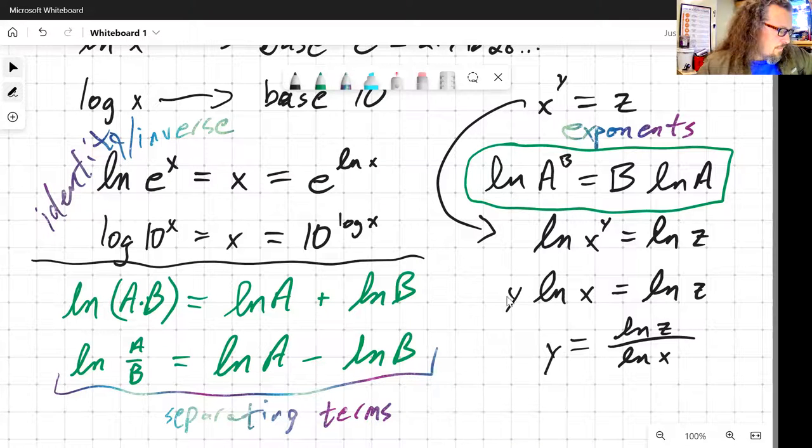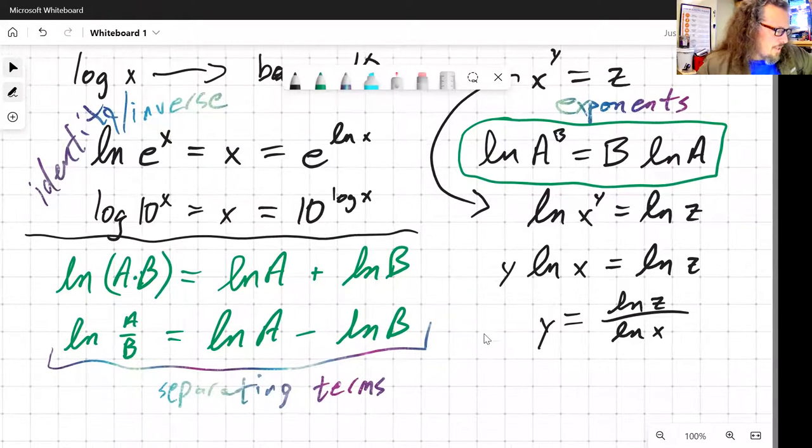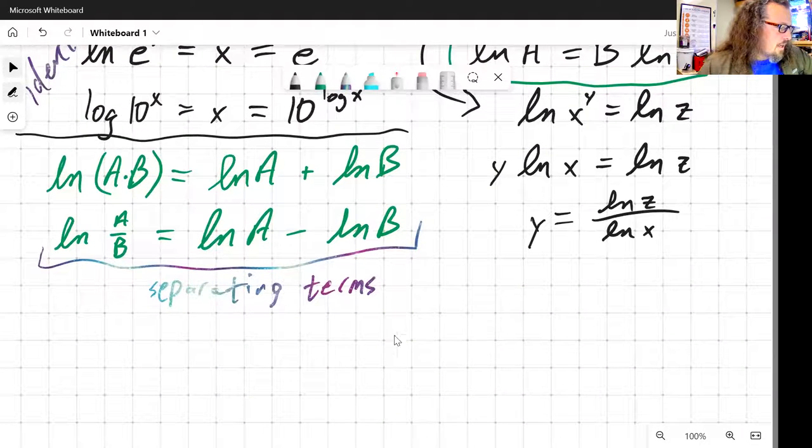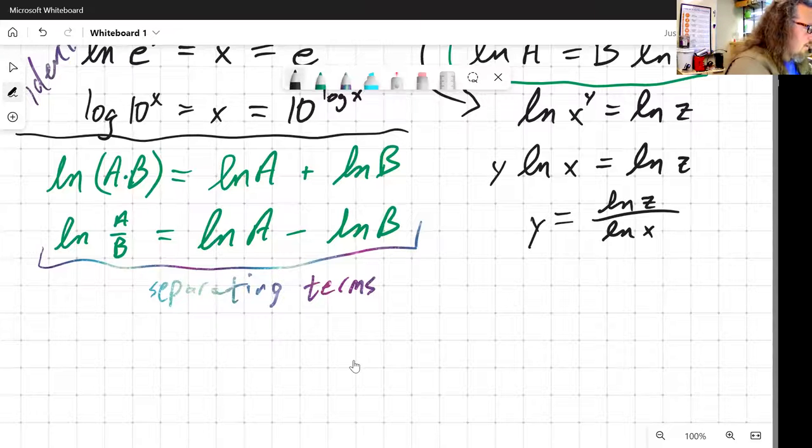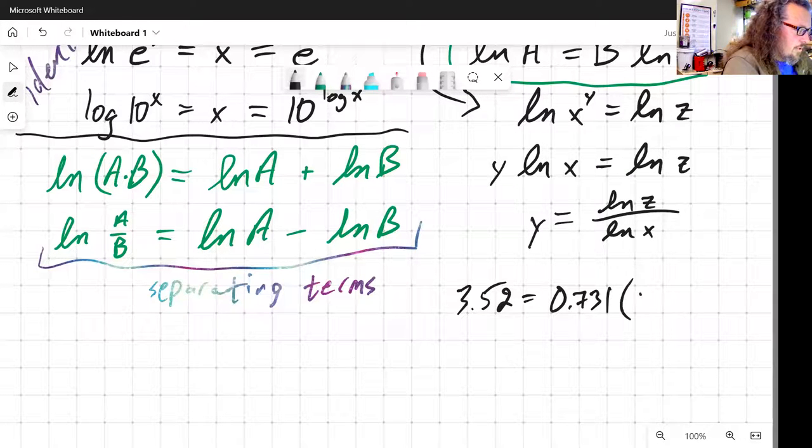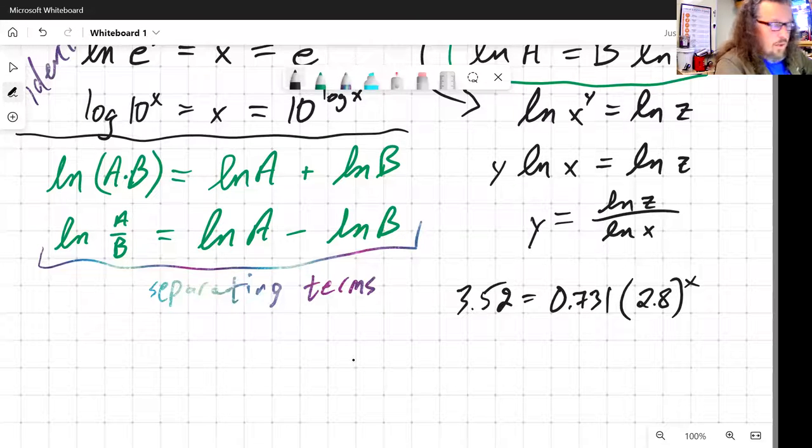As a little bit of an application, since I just see it sitting right there, what about something like a rate law expression where you get to 3.52 is equal to 0.731 times 2.8 raised to the x? Using real numbers, how do we solve for x? Well, let's go through some of our steps here.